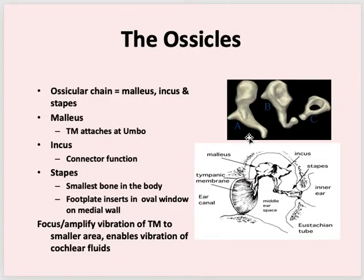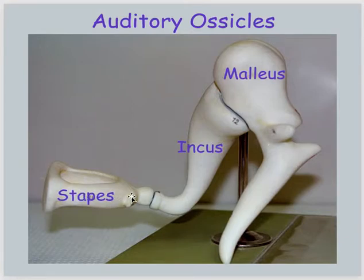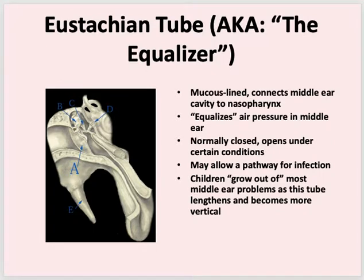The stapes is the smallest bone in the body, and its footplate inserts into the oval window. The malleus is attached to the tympanic membrane, and the stapes is attached to the oval window. The eustachian tube — also known as the equalizer — connects the middle ear with the pharynx.